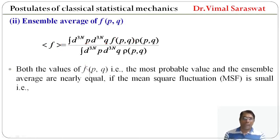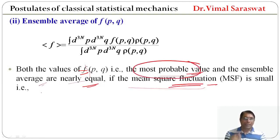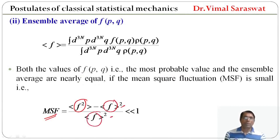Both values of f — the most probable value and the ensemble average — are nearly equal if the mean square fluctuation is small. The mean square fluctuation is defined as the ensemble average of f² minus the square of the ensemble average of f, divided by the ensemble average of f. If this mean square fluctuation is very much less than one, then both methods give the same result.